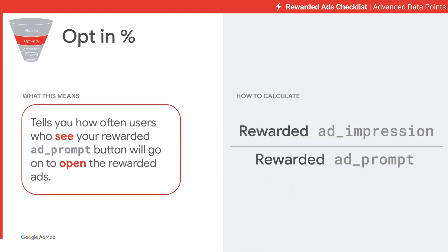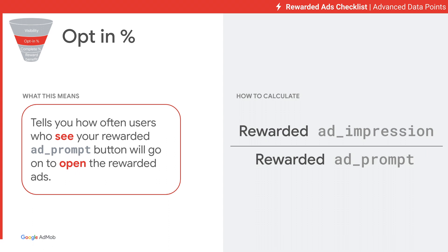The second advanced metric is Opt-In Rate, which is calculated by Rewarded Ad Impression over Rewarded Ad Prompt. This metric tells you how often users who see the Rewarded Ads Prompt button will actually open the ad. If this metric is not performing well, it could be that users didn't notice the ad or the Rewarded ad is not attractive enough. In this case, you should consider designing the Rewarded button to stand out more in the UI, or test different Rewarded items and value.